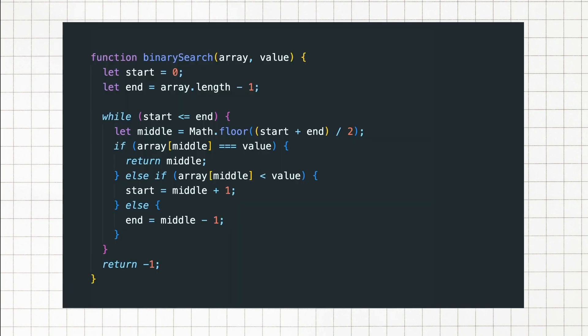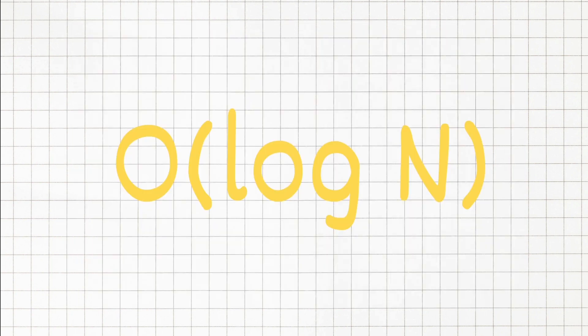This means that you're efficiently zoning in on your target. On each step, we are reducing our problem size by half, hence it's a log n complexity.